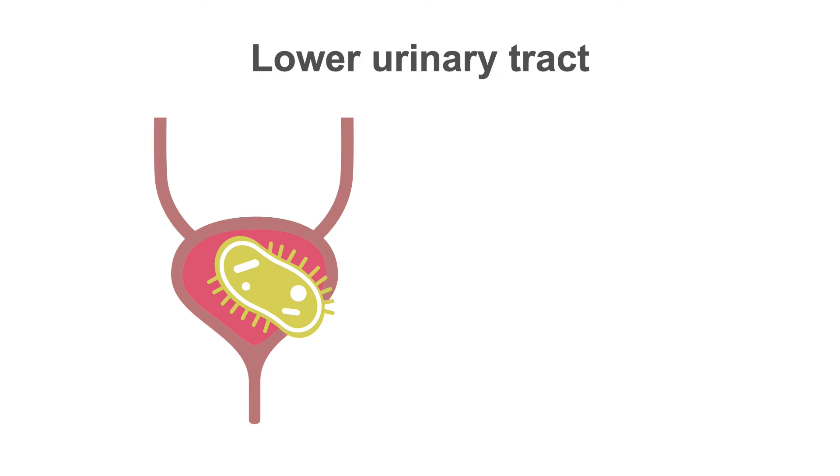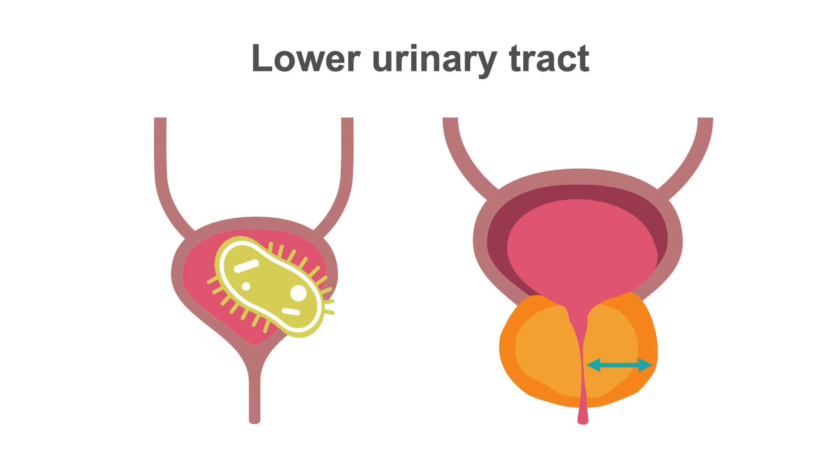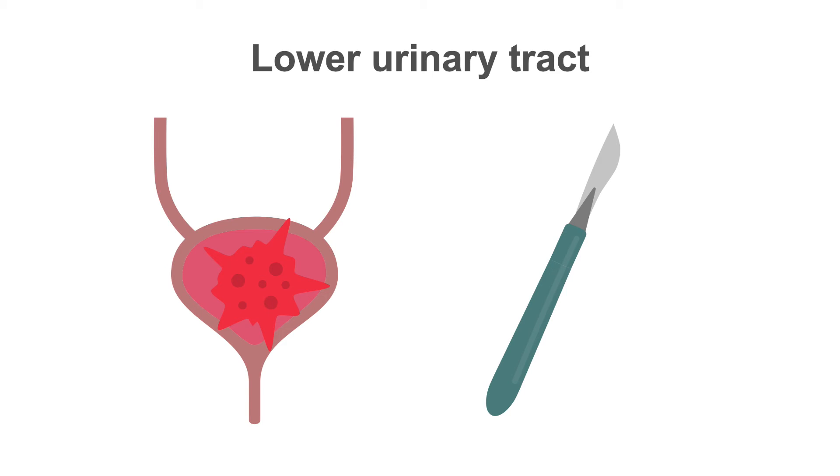Examples of hematuria from the lower urinary tract include urinary tract infection, enlargement of the prostate, tumors and surgical instrumentation.